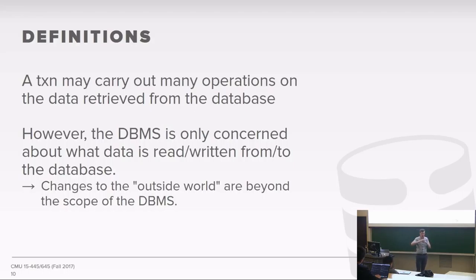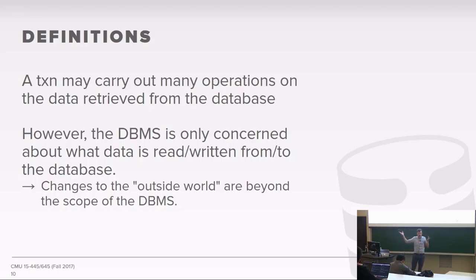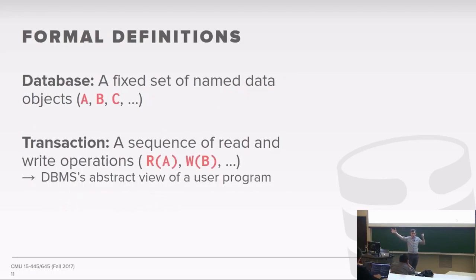In our environment, transactions carry out one or more operations on data retrieved from the database, but the database management system is only in charge of scheduling operations that read and write data inside the database. So if a transaction does a bunch of reads, then writes, and in the middle sends a confirmation email to the customer saying 'your order succeeded,' but then the transaction fails and needs to roll back — that email is outside the control of the database system. It can't retract that email. The scope of what we deal with is only inside the database.